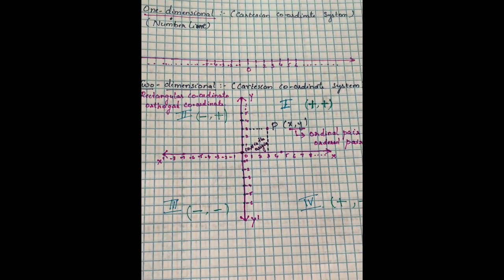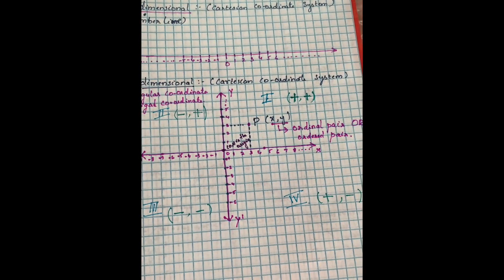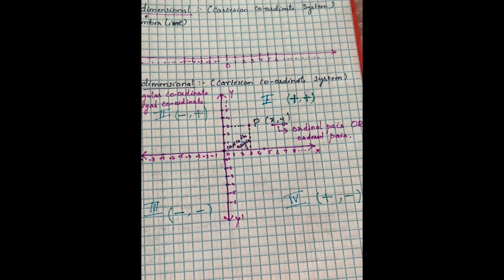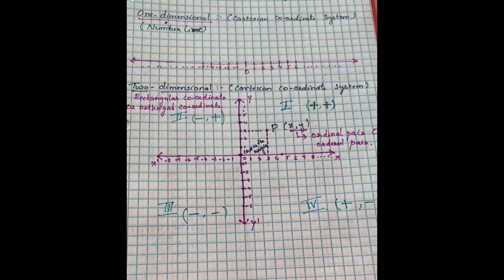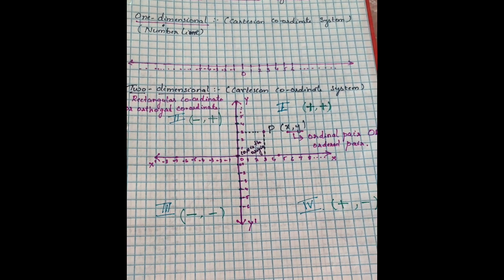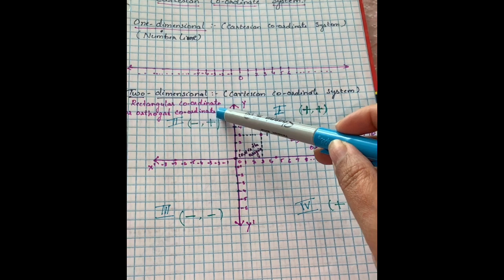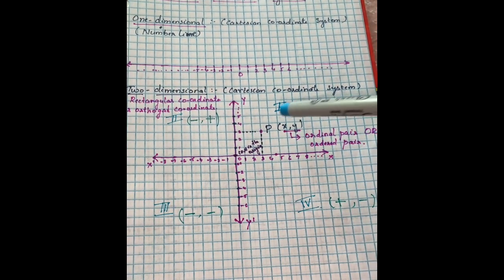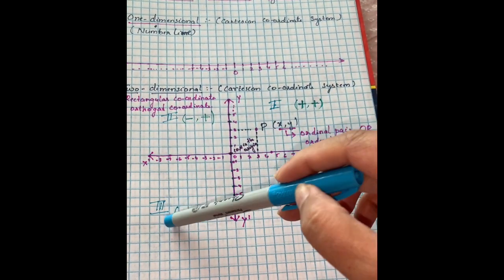The Cartesian coordinate system plays a fundamental role in the development of calculus, trigonometry, analytical geometry, and the applied sciences. In this session we will deal with the two-dimensional Cartesian coordinate system, also called the rectangular coordinate system or orthogonal coordinate system. Each point in the system is represented by an ordered pair and the plane is divided into four quadrants: first, second, third, and fourth.